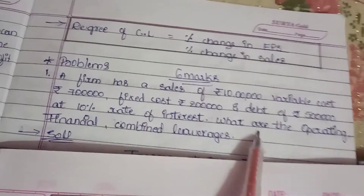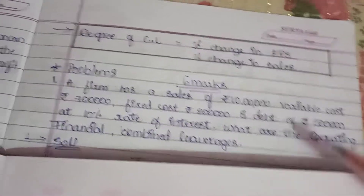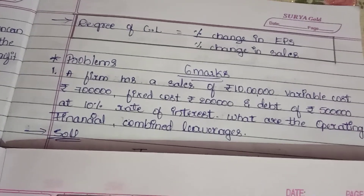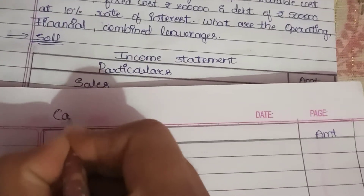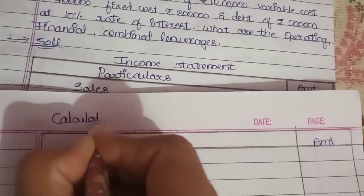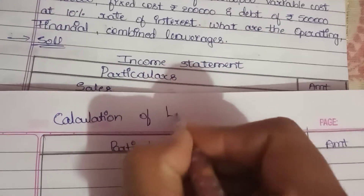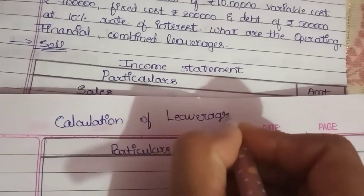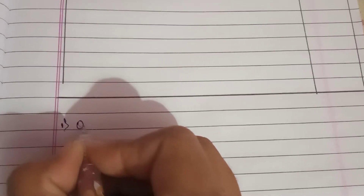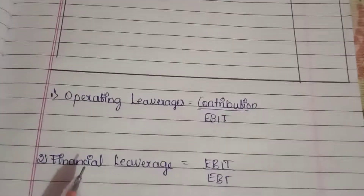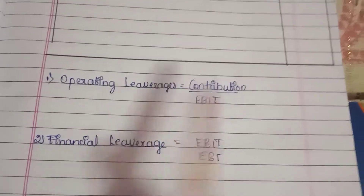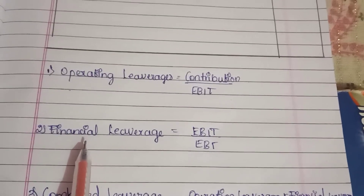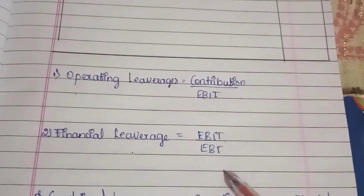What is the operating profit? We need to find the operating and financial leverages. Contribution and EBIT: contribution is 3 lakhs and EBIT is 1 lakh. Financial Leverage is EBIT divided by EBT.